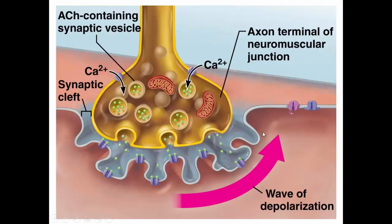Looking again at the neuromuscular junction: the action potential on the neuron will cause the release of acetylcholine. Acetylcholine will diffuse across the synapse and attach to the receptors on the motor end plate, and this is going to cause a wave of depolarization — an action potential — to spread all along the sarcolemma.